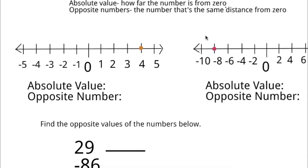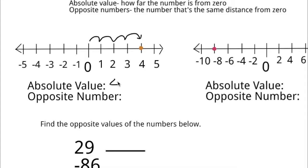So let's try this out on number lines. The number you've been given is positive four. Now to find the absolute value of positive four, you have to see how many numbers you skip from zero to get to four. So you skip one, two, three, four numbers to get to four. So your absolute value is four.